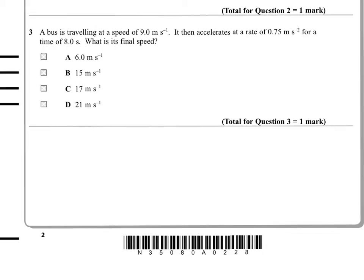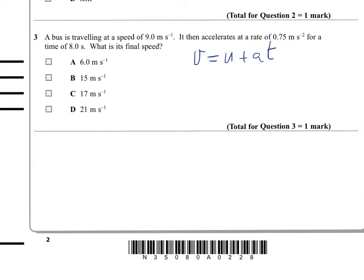A bus is travelling at a speed of 9 metres per second, it then accelerates at a rate of 0.75 metres per second squared for a time of 8 seconds. What is its final speed? So v equals u plus at.